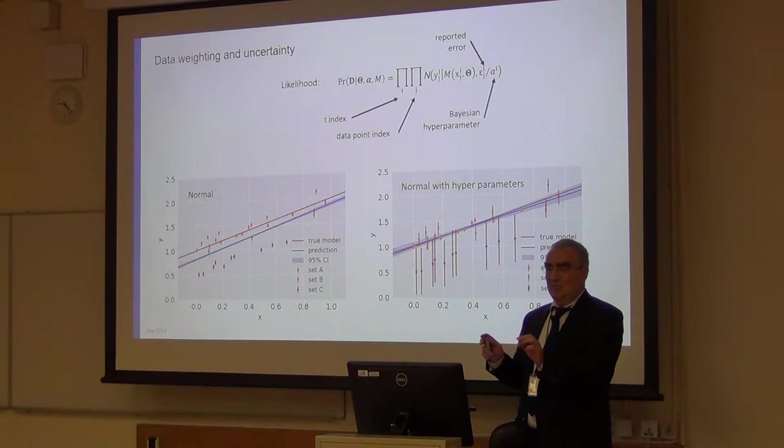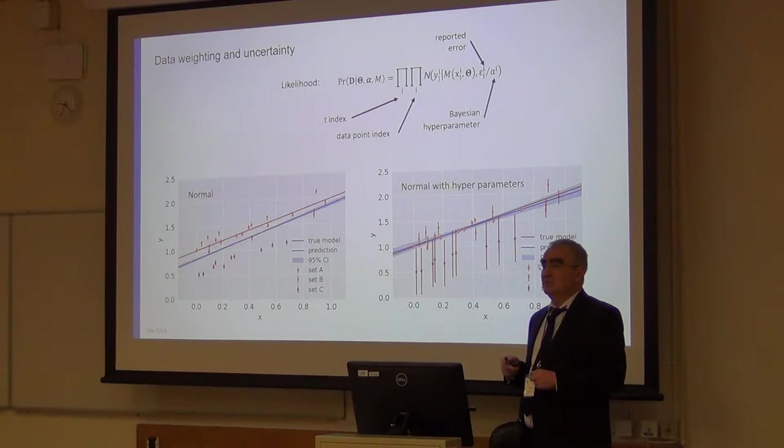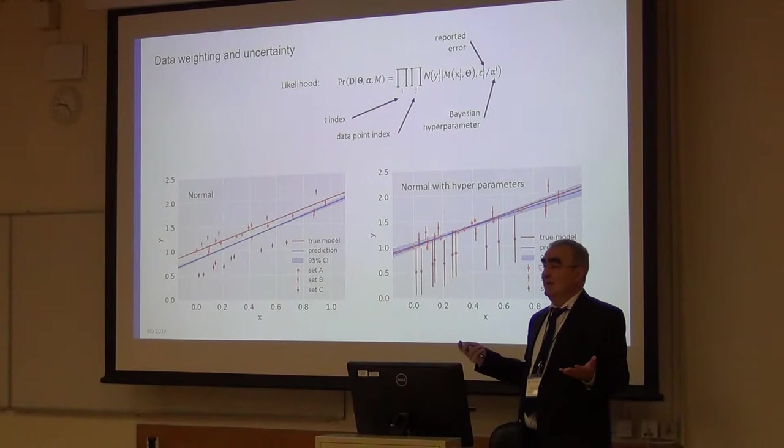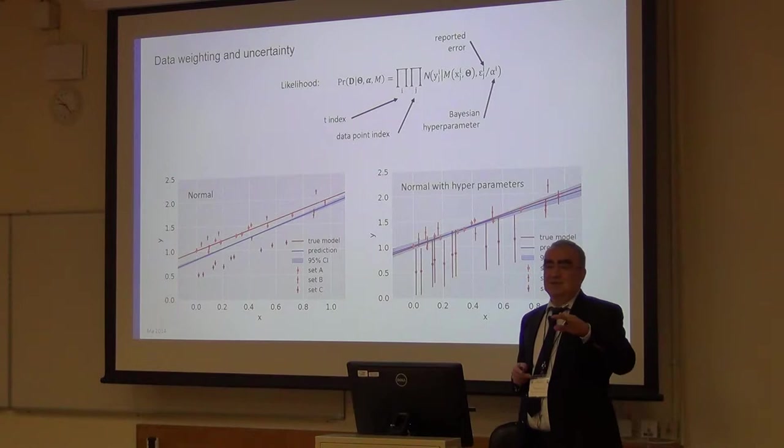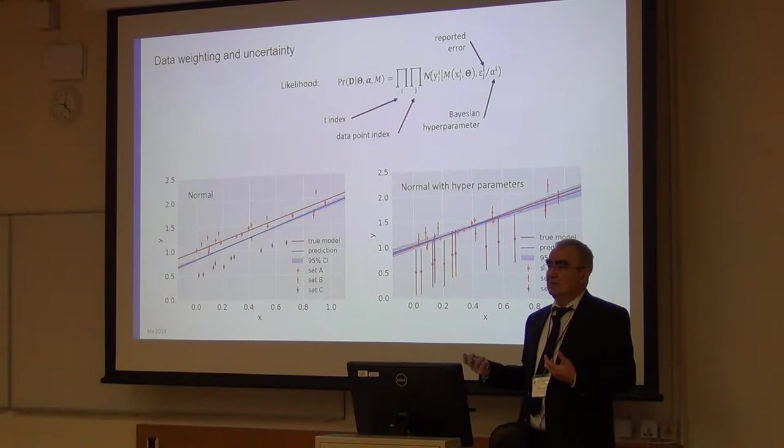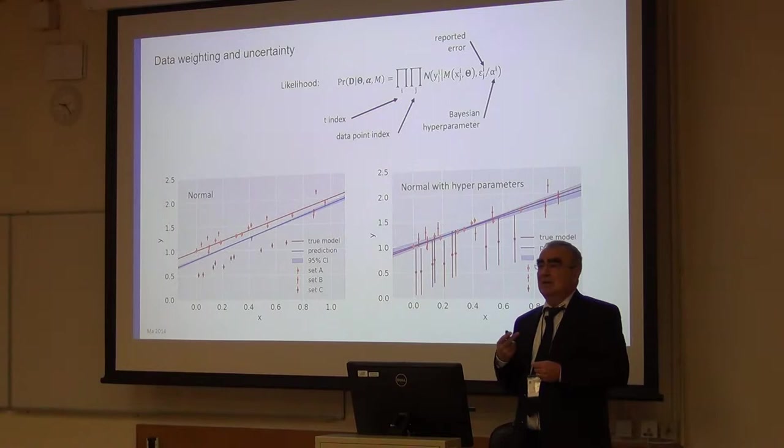We chose following an idea by Ma in 2014, which is to introduce a hyperparameter and let that be optimized by the Bayesian analysis, such that we get not only the model parameters but also the uncertainty as a result of the analysis. We will be able to tell if the reported uncertainty was correct, in which case alpha should be one. But if alpha is very small, that will blow up the uncertainty for a specific data set, saying that the report was underestimating that value. This is very important for this type of studies because we can determine the quality of the data that was reported and the quality of the models.